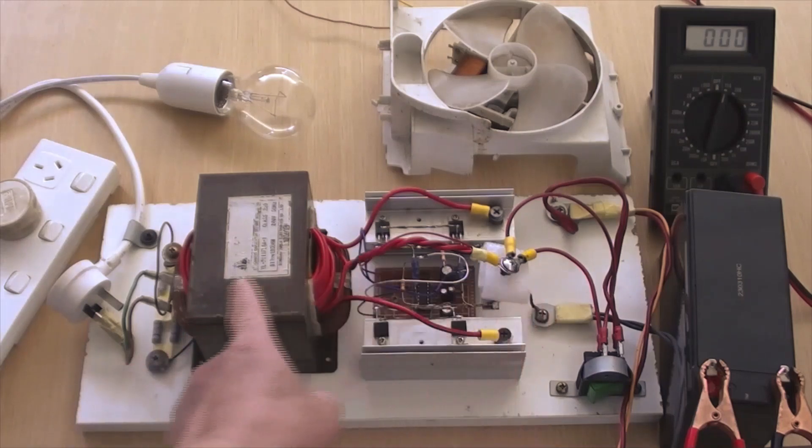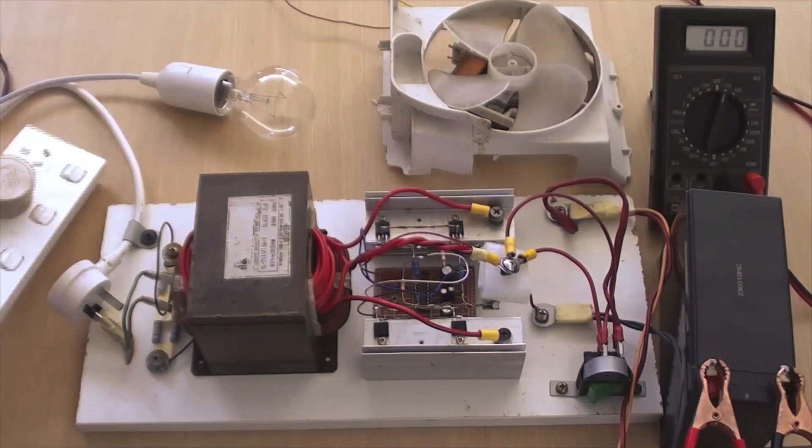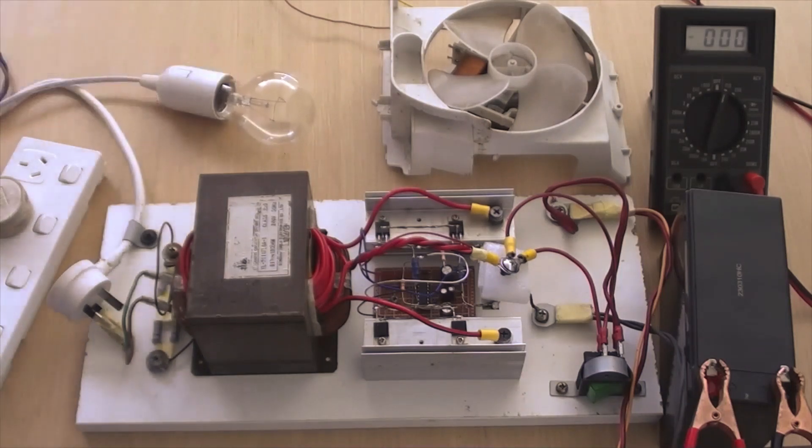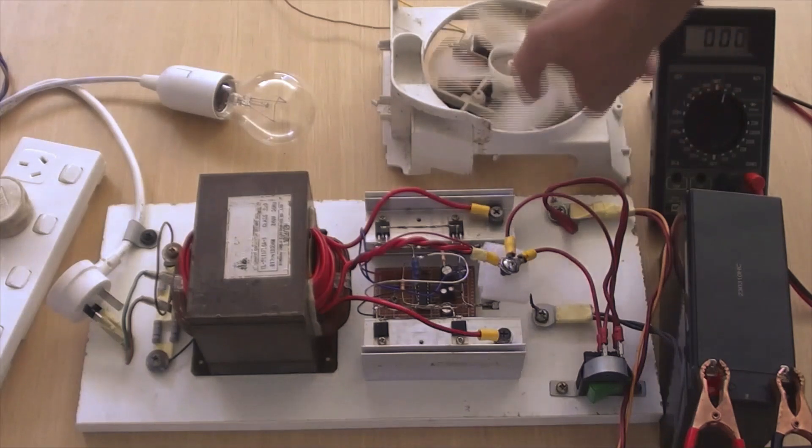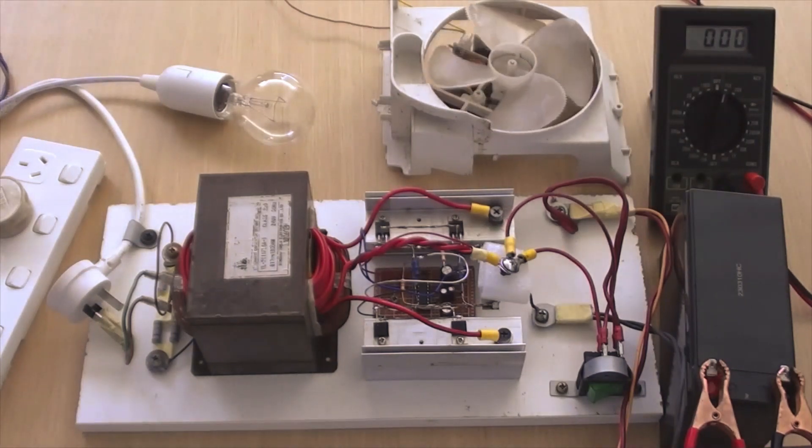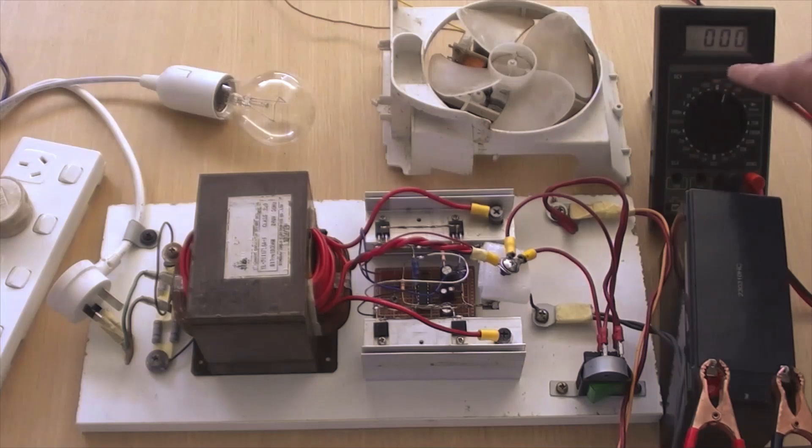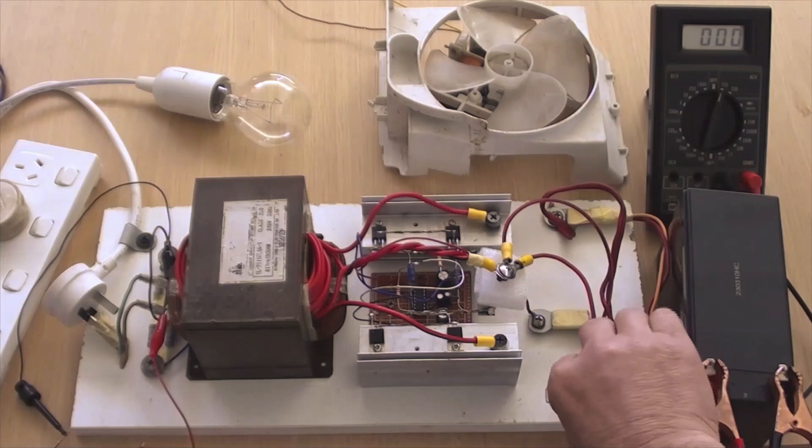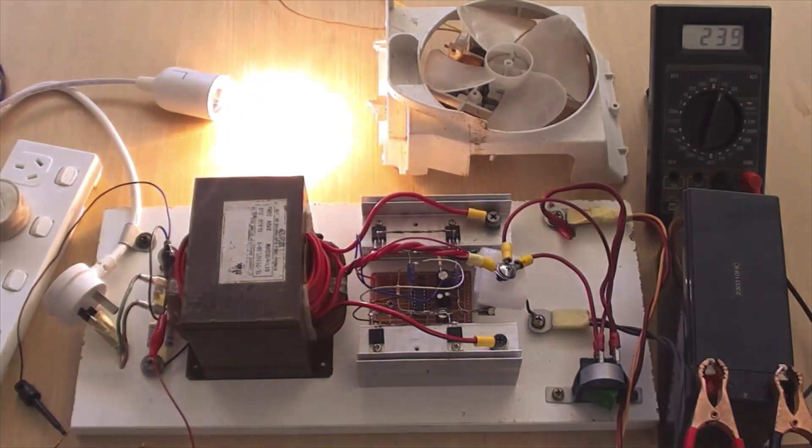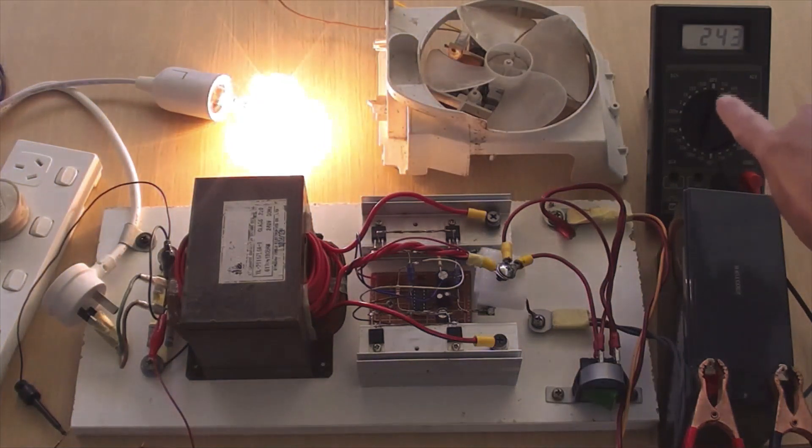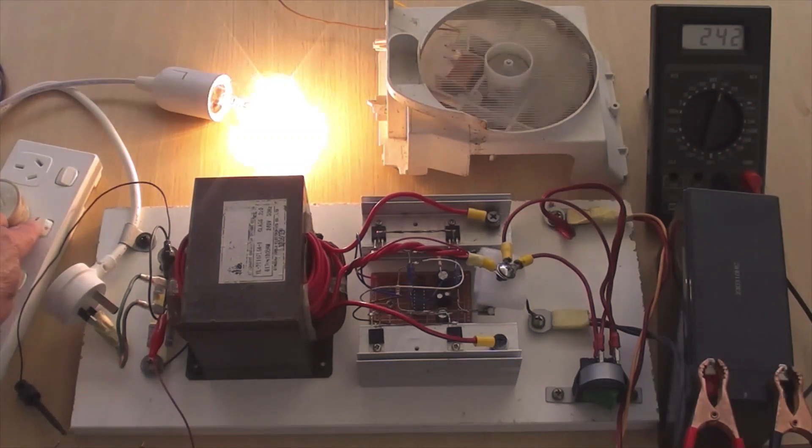The socket set has been plugged in the load, as one globe and a fan from recycled microwave oven. A multimeter with AC voltage position and 12 volt battery connected. Switched the DC power on, the globe lighten and the multimeter indicated AC 242 volt. Switched the fan on and multimeter indicated AC 240 volt.